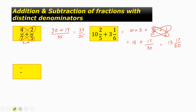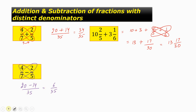The next question is 4/7 minus 2/5. What we do is 4 into 5 is 20, minus 2 into 7 is 14, divided by 7 into 5 is 35. So this comes out to be equal to 6 by 35.